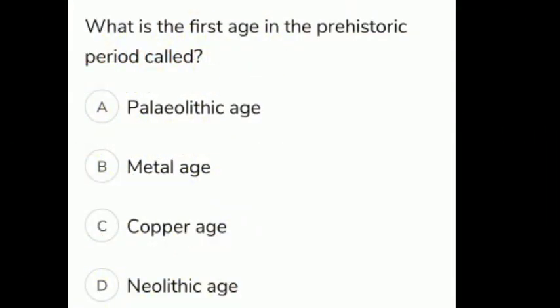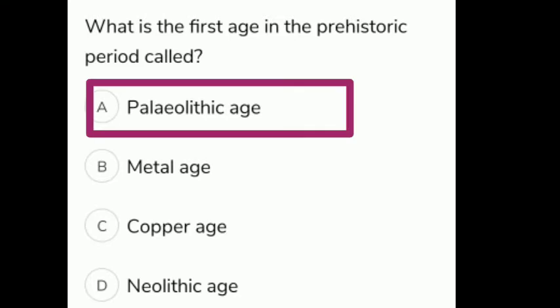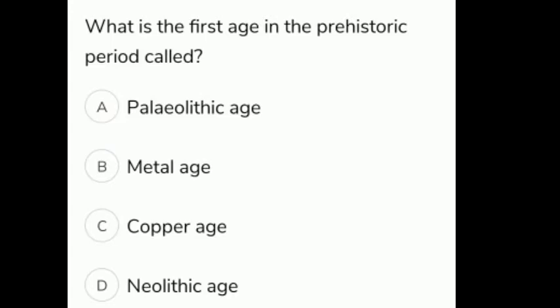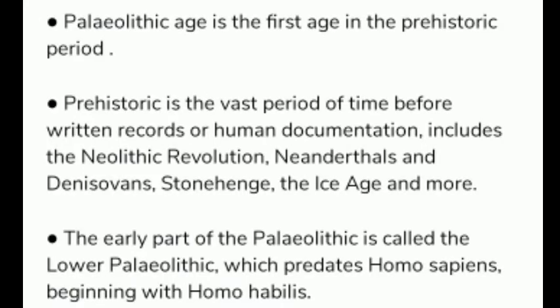What is the first age in the prehistoric period called? The given options are A Paleolithic Age, B Metal Age, C Copper Age, D Neolithic Age. The correct answer is option A, the Paleolithic Age. The Paleolithic Age is the first age in the prehistoric period.